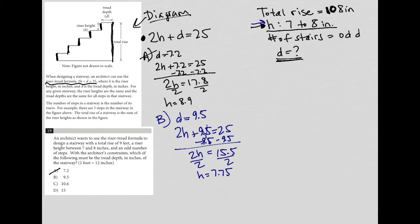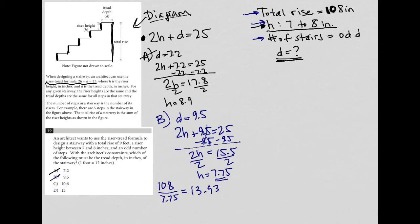Does that make it the correct answer? Well, no, because we have to figure out: can I get a total rise of 108 inches if my riser height is 7.75, and does that lead to an odd number of steps? If the total rise is 108 and each riser height is 7.75, then 108 divided by 7.75 gives the number of stairs. On the calculator, 108 divided by 7.75 gives 13.93, so B cannot be correct because I cannot have 13.93 stairs.